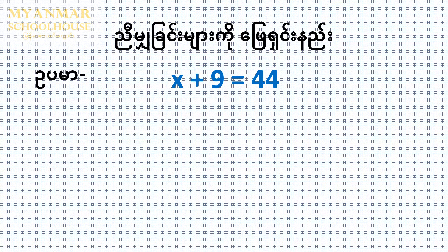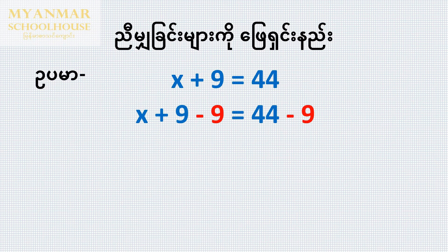The equation for x plus 9 is equal to 44. The x plus 9 is equal to 44.